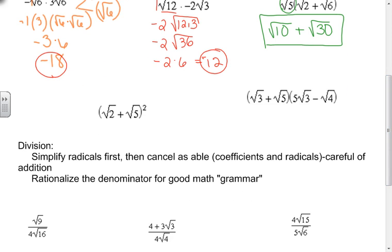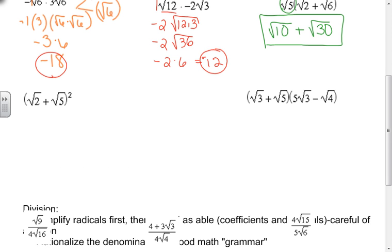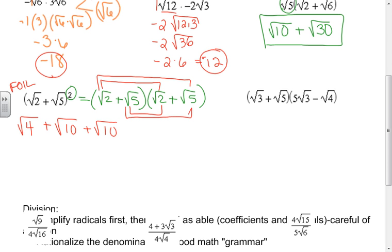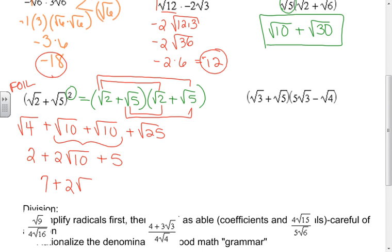Looking at the next two examples, don't be tricked by this first one. Remember what squared means — it means there are two of them — so when you write it out you see it's a FOIL problem. First terms: square root of 2 times square root of 2 is square root of 4. Outside terms give plus square root of 10. Inside terms give plus square root of 10. Last terms give plus square root of 25. Simplifying: square root of 4 is 2, square root of 10 plus square root of 10 is 2 square roots of 10, and square root of 25 is 5. Combining whole numbers gives 7 plus 2 square roots of 10.